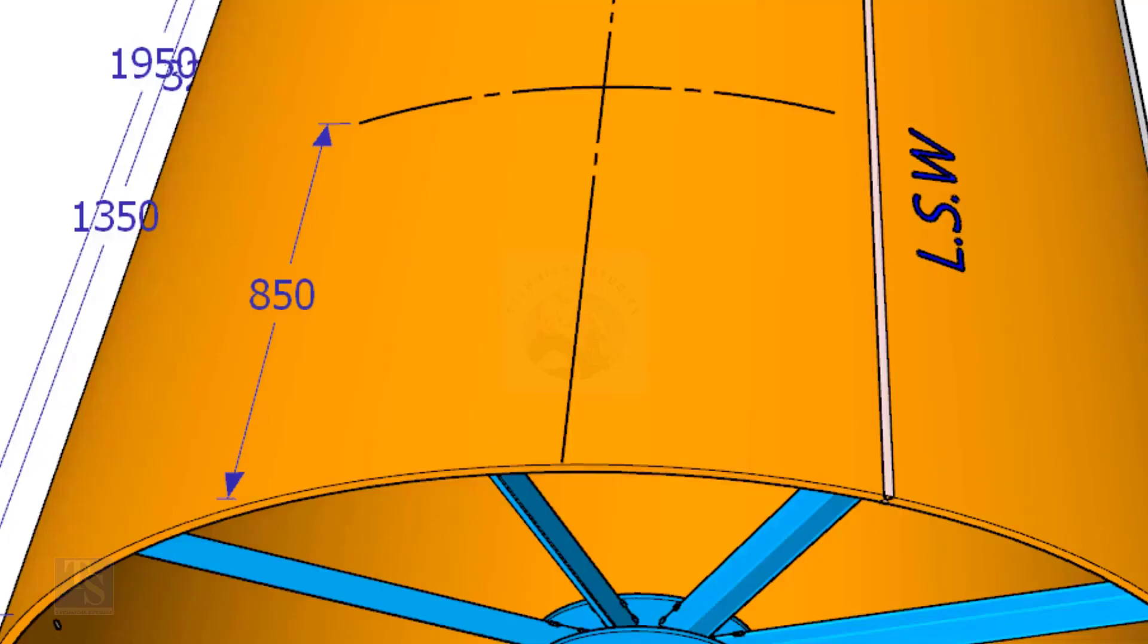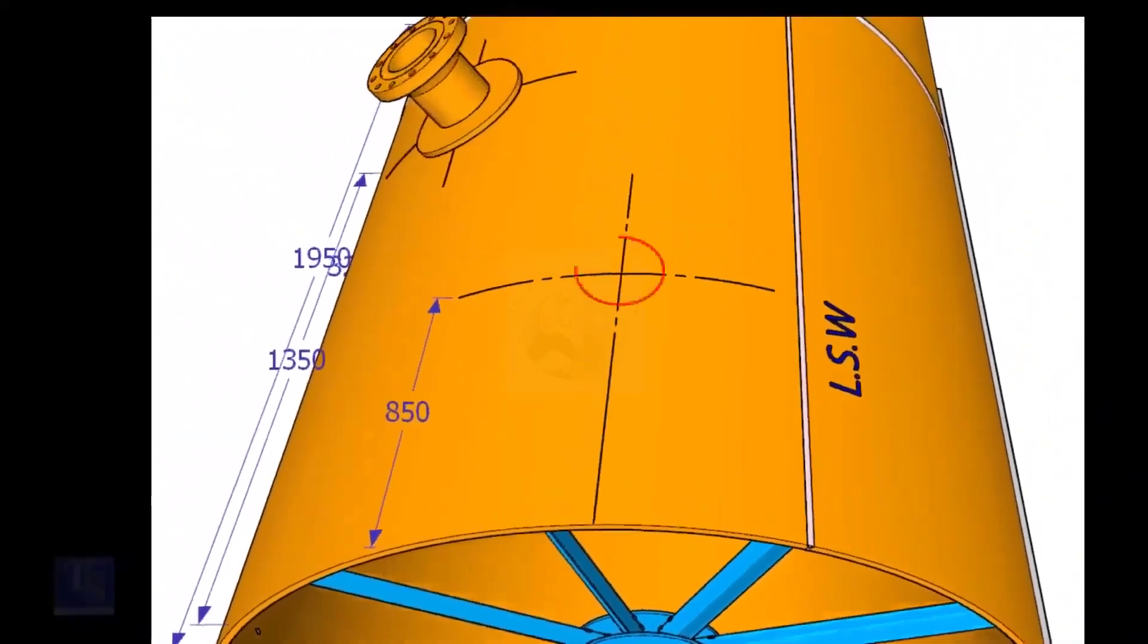Mark the same distance roughly 850 millimeters away from the end of the shell and draw a line. Now mark 850 millimeters exactly on this line from the end of the shell as shown. This is the center of the nozzle N1.